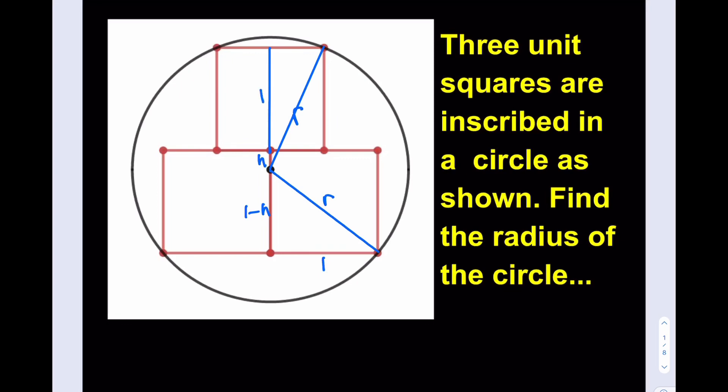And this will be one, and this will be one half. From symmetry, obviously, this needs to be the midpoint. Okay? All right, so what we can do now is we can actually write down the relationships and try to solve for r. All right, let's proceed.